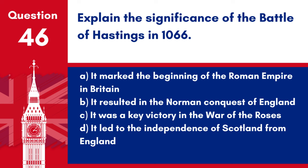Question 46: Explain the significance of the Battle of Hastings in 1066. a. It marked the beginning of the Roman Empire in Britain. b. It resulted in the Norman Conquest of England. c. It was a key victory in the War of the Roses. d. It led to the independence of Scotland from England. Answer: b. It resulted in the Norman Conquest of England. The Battle of Hastings was a pivotal moment in English history, leading to Norman control of England and significant cultural and political changes.